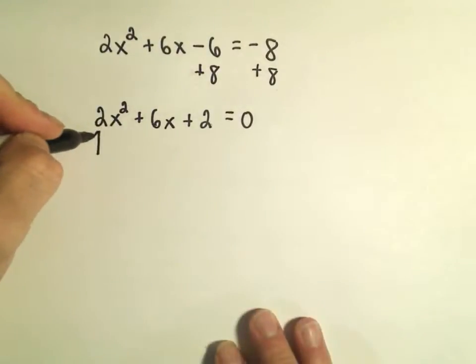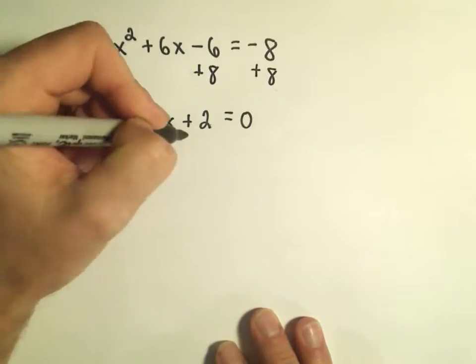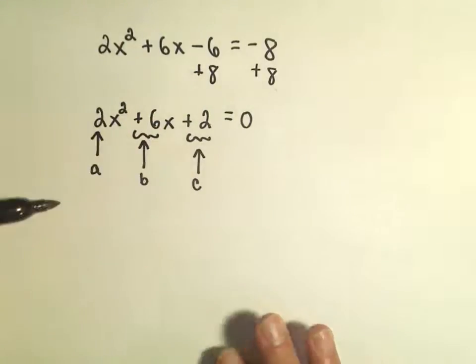And again, the positive 2, that's going to be our a value, the positive 6, that's going to be our b value, and the positive 2, that's going to be our c value.